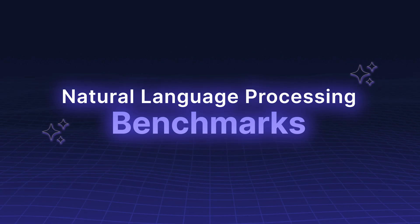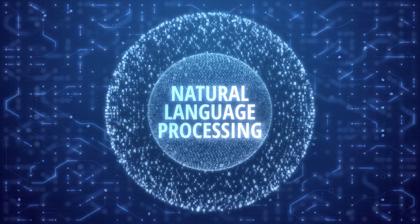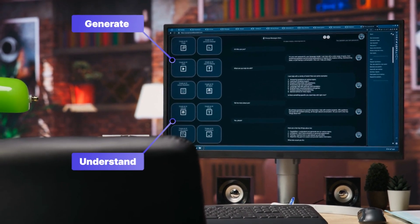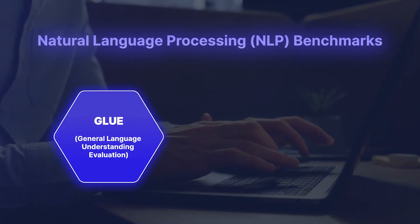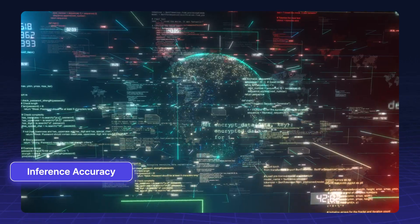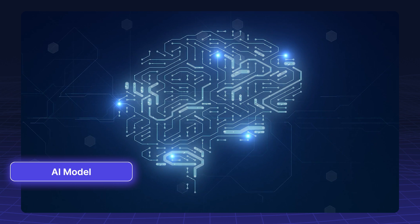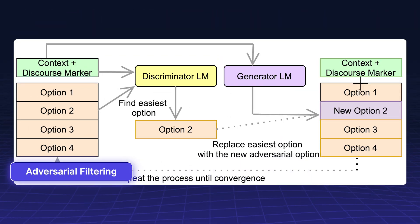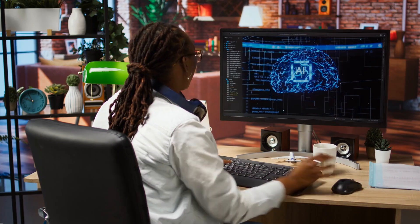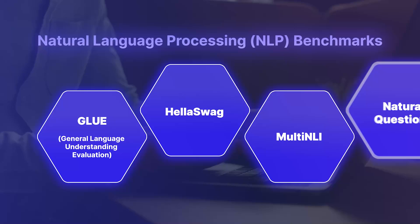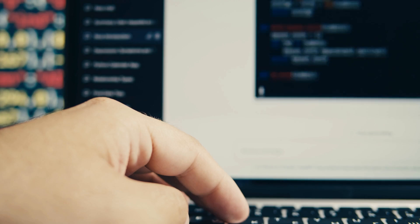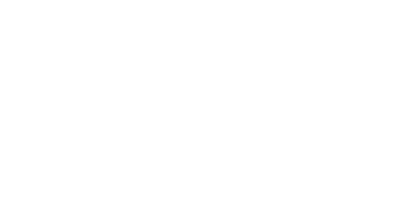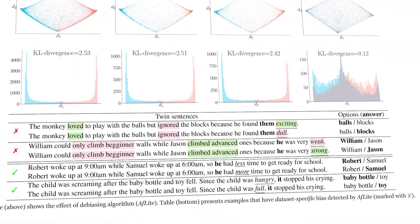Natural Language Processing (NLP) Benchmarks. NLP is at the heart of LLMs, allowing them to generate and understand human-like text. Some of the most significant NLP benchmarks include: GLUE (General Language Understanding Evaluation), which measures paraphrasing, sentiment analysis, and inference accuracy; HellaSwag, which tests a model's ability to predict the next sequence of events using adversarial filtering; Multi-NLI, which evaluates a model's ability to handle inference across different genres; Natural Questions, which assesses how well LLMs extract answers from large knowledge sources; SuperGLUE, a more advanced version of GLUE focusing on complex NLP tasks such as reasoning and textual entailment; and Winograd, which tests a model's ability to resolve pronoun ambiguities in sentences.